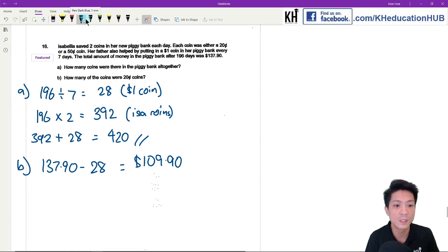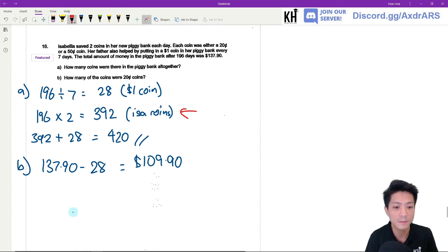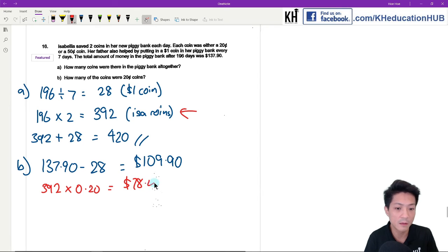Okay, so now in this case I know that 392 coins is the total number of coins that Isabella put into the piggy bank. Okay, so I'm going to use the supposition method, which I'm going to assume all of them are 20 cent coins. So 392 times 20 cents is going to give me $78.40.